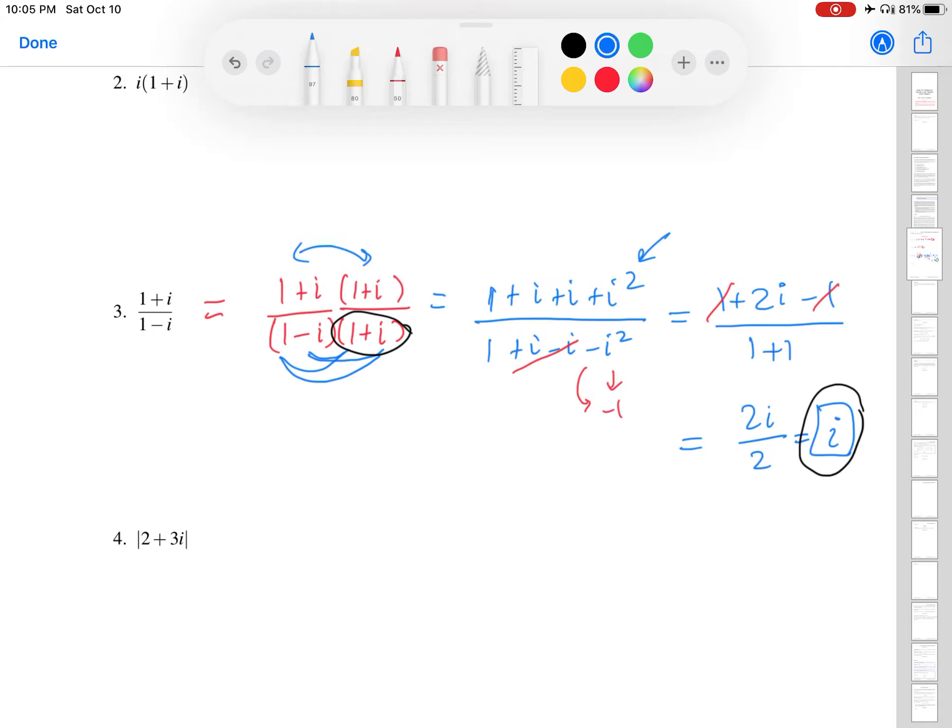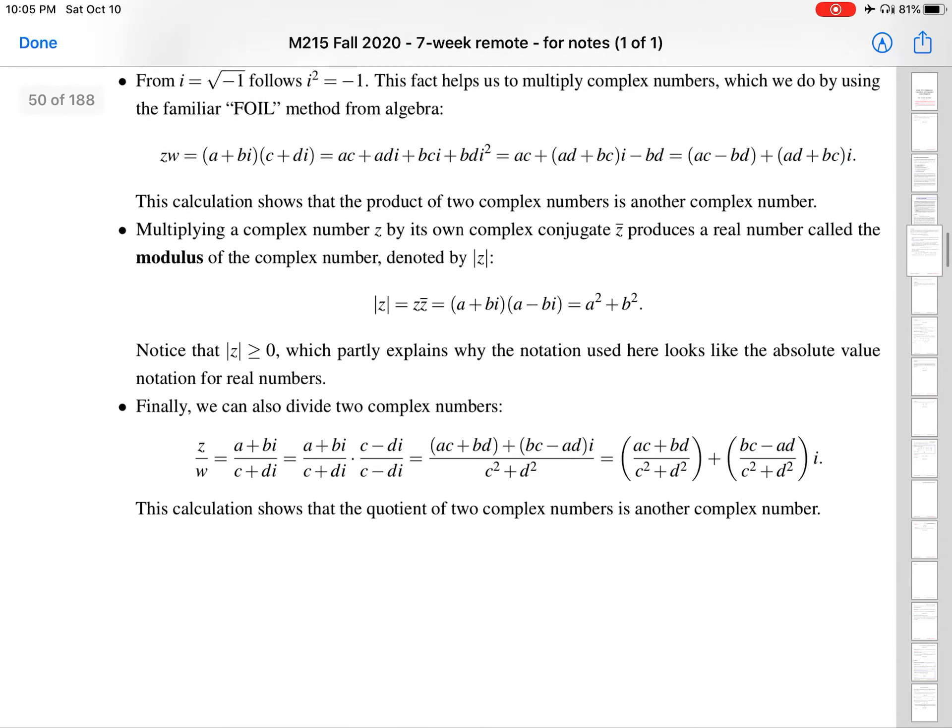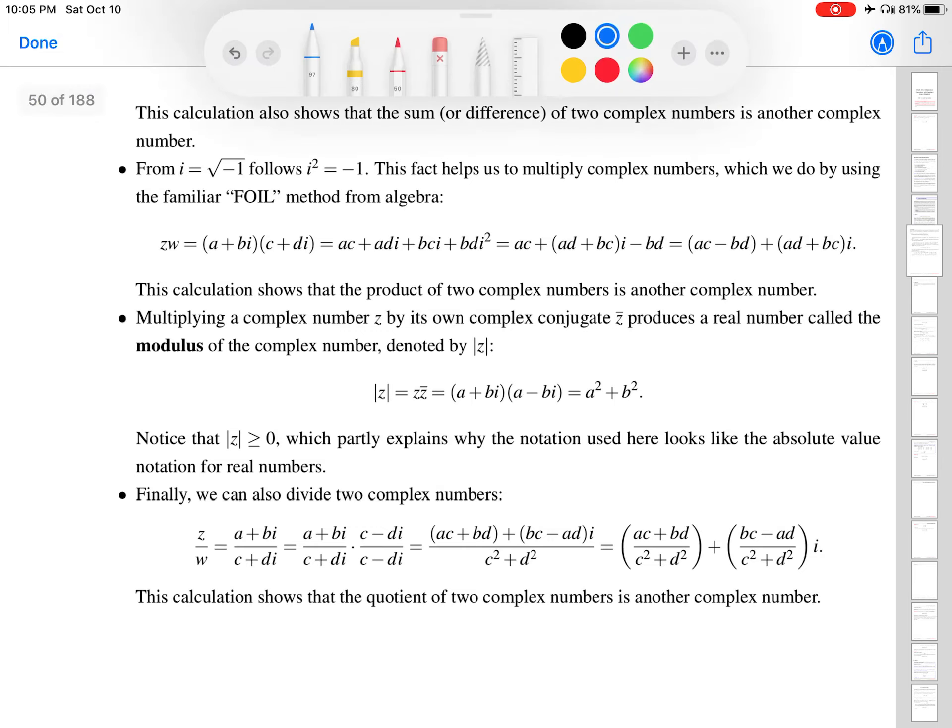So then going down here, what does this mean? So this looks like absolute value, but this is not a real number. This is a complex number. So it's not absolute value, it's the modulus. And remember what the modulus is. Let's scroll up a little bit, just to remind ourselves. So up here is the definition that I put in for the modulus.